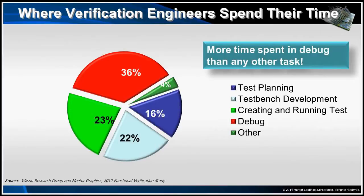In the Verification Academy ABV course, I'll reference multiple industry peer-reviewed papers which claim a 50% reduction in debugging time after assertions were introduced into the flow. Let me explain why this is the case in the next couple of slides.